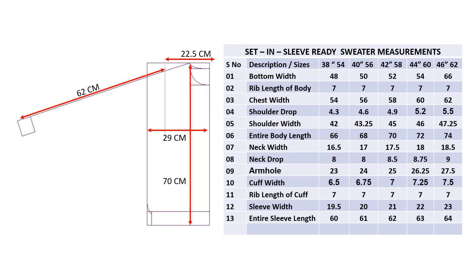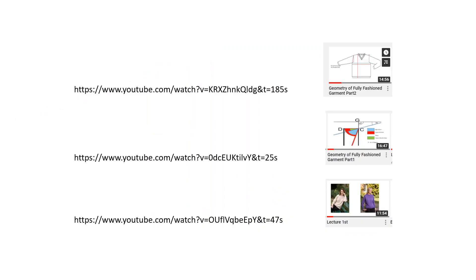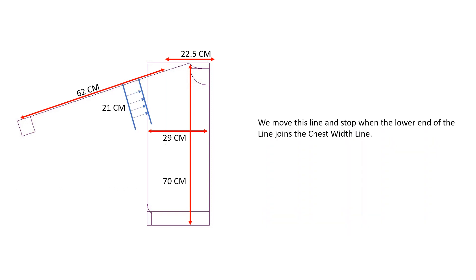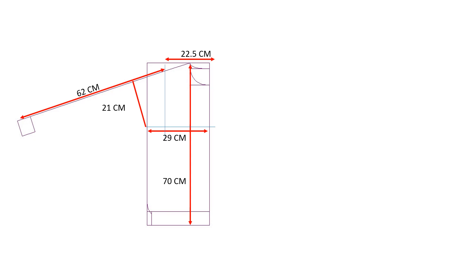Coming back to our main topic of today, we already know how to draw the extended sleeve as per the given measurements and draw the sleeve rib box. Those watching this series for the first time are advised to watch the Sweater Geometry 2 video — preferably all three previous videos. Once we have the extended line ready and we know the sleeve width, we draw a perpendicular on the sleeve line equal to the sleeve width, and move this line to and fro till the lower point touches the chest line. The point where this perpendicular joins the chest line is the point where the sleeve will join the main body.